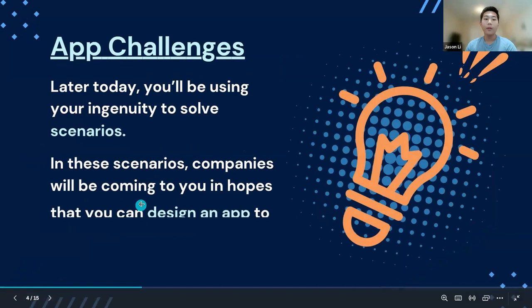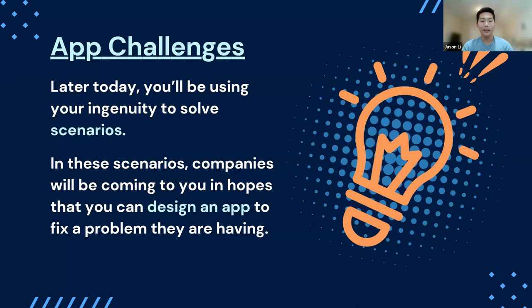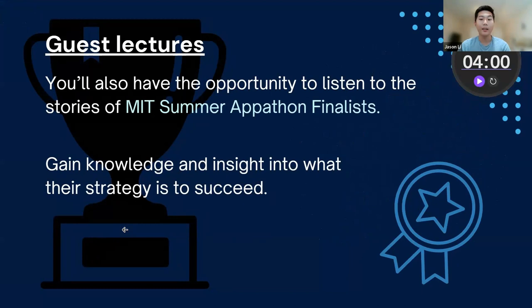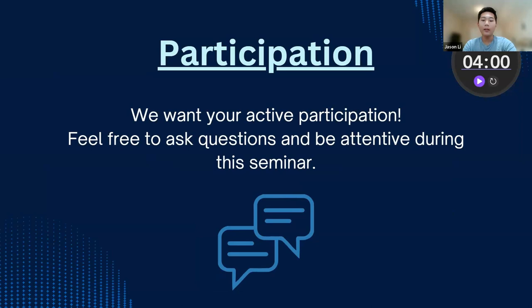For the app challenges, you'll be coming up with app ideas that solve scenarios. In these scenarios, companies are coming to you with problems and you're going to be designing an app that fixes the problem they're having — by design, I just mean brainstorming an app idea. And tomorrow you'll have the opportunity to hear the stories of the MIT App Summer Appathon finalists and hear what they did to succeed and what their strategies were. Remember, the best way to learn is to actively participate — feel free to ask questions and be attentive during the seminar.